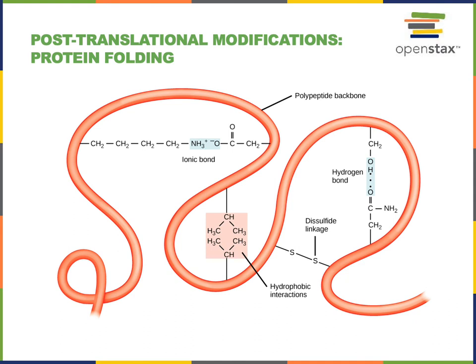When two charged side chains have the same charge, they repel one another, whereas opposite charges help stabilize the folding structure through attraction. Some amino acid side chains are capable of forming covalent bonds to further stabilize folding into the tertiary structure. The amino acids cysteine and methionine contain sulfur, and these sulfur atoms can bond together through a covalent bond, forming a disulfide linkage that stabilizes the tertiary structure of the forming protein.